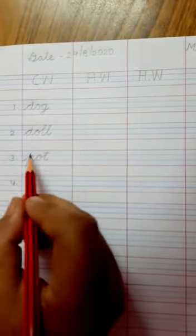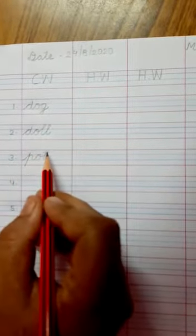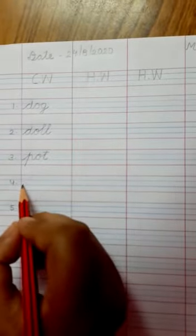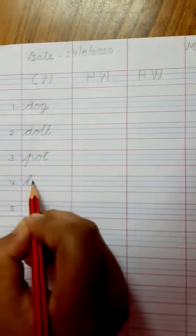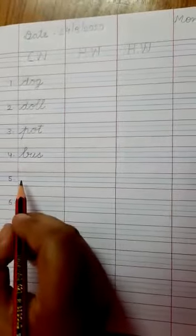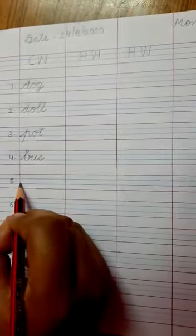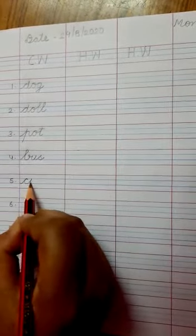These letters also not touch the above red line. Then bus and the spelling is B-U-S. After bus, the next word is cup and the spelling is C-U-P.